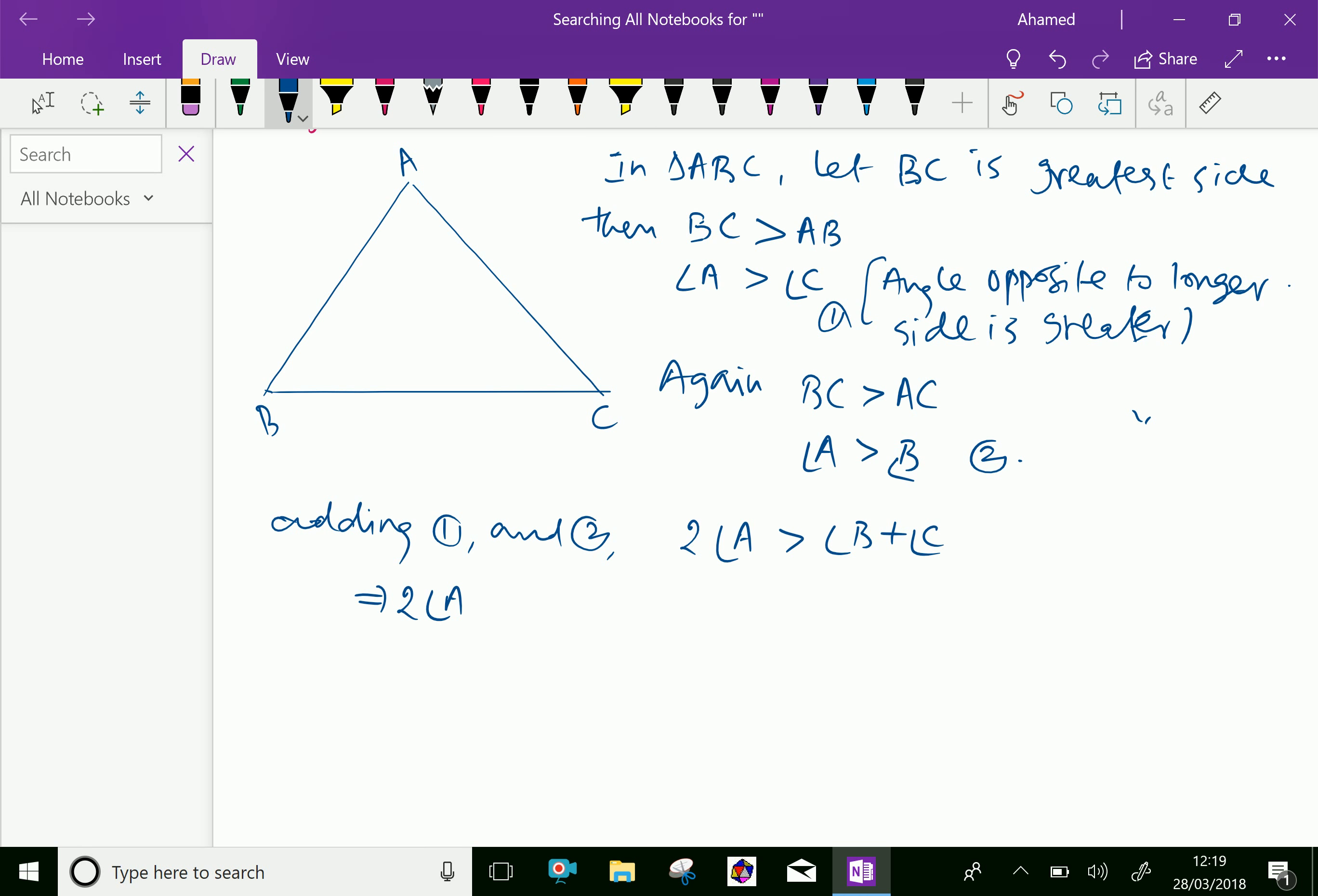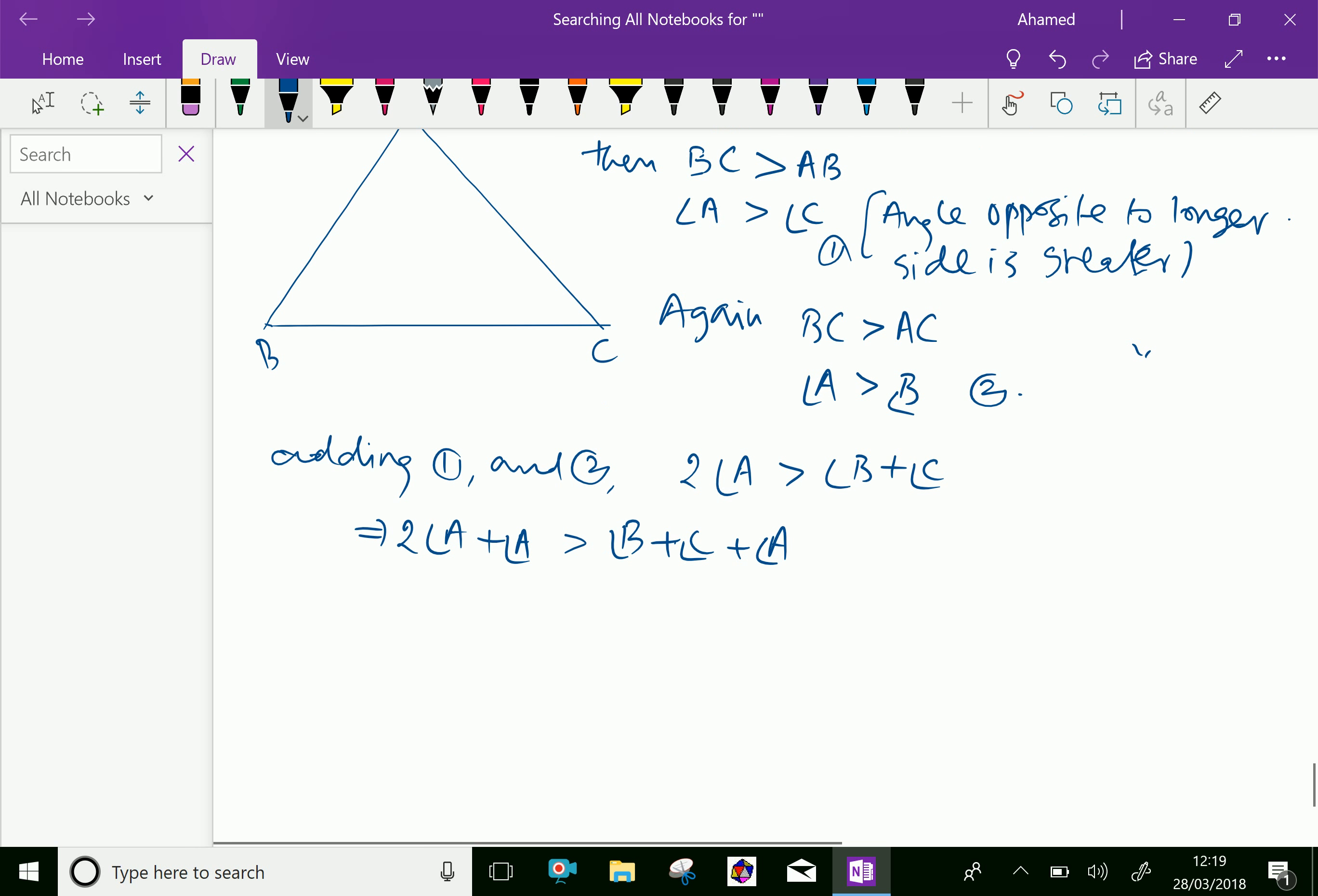Now suppose we are adding angle A to both sides. We get 2A plus A, which equals 3 times angle A, is greater than angle B plus angle C plus angle A.